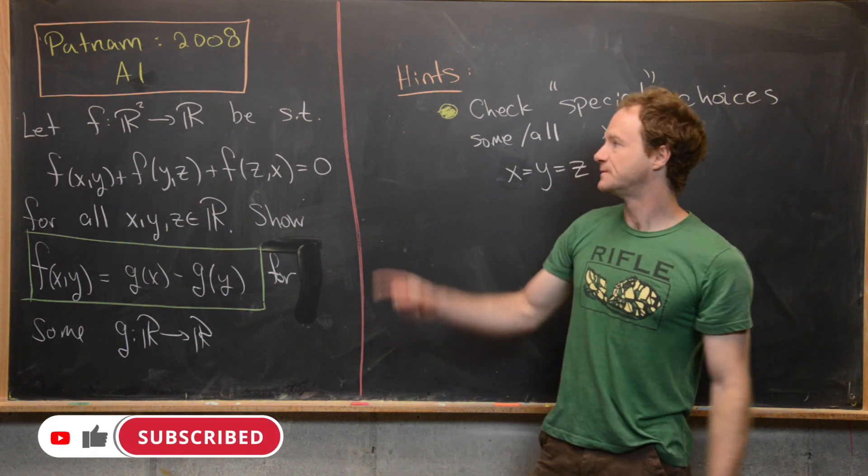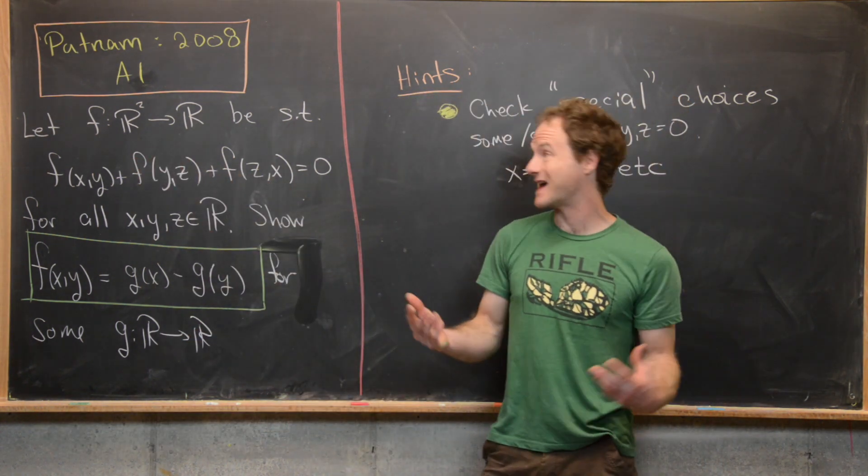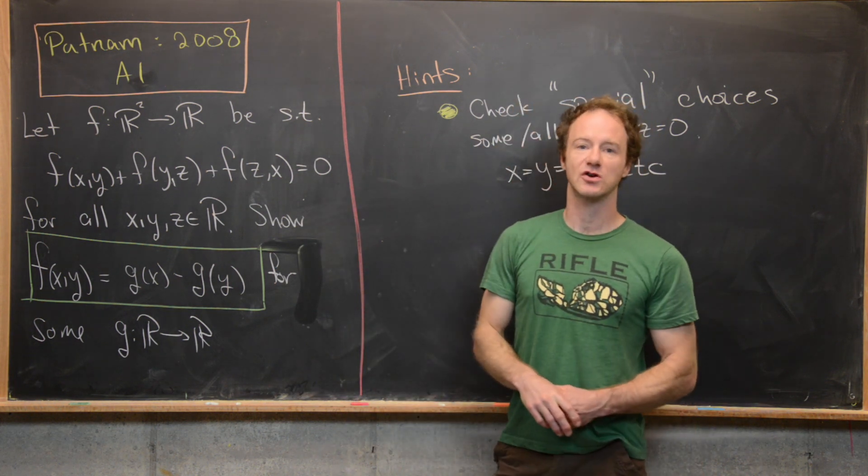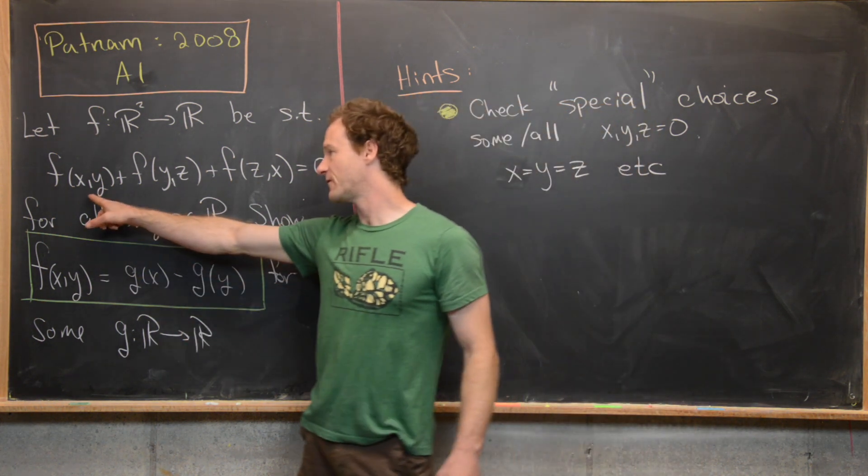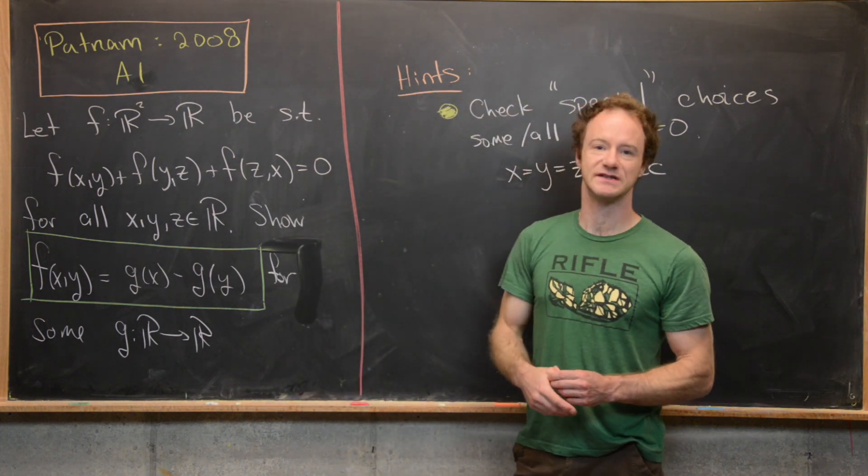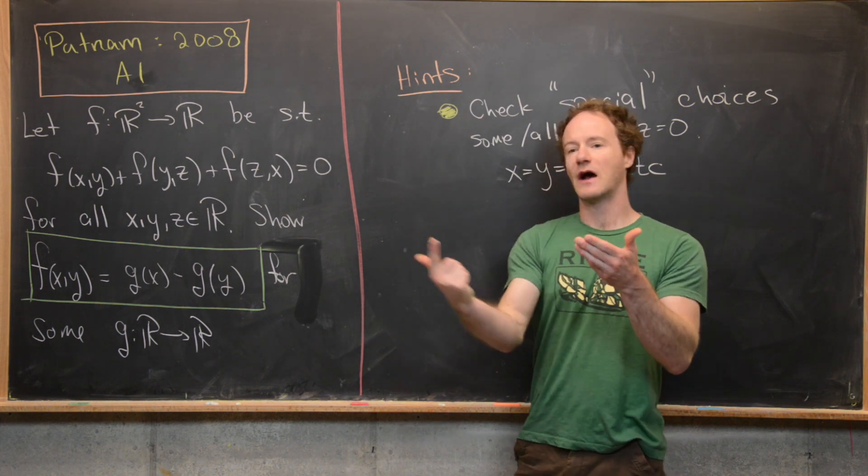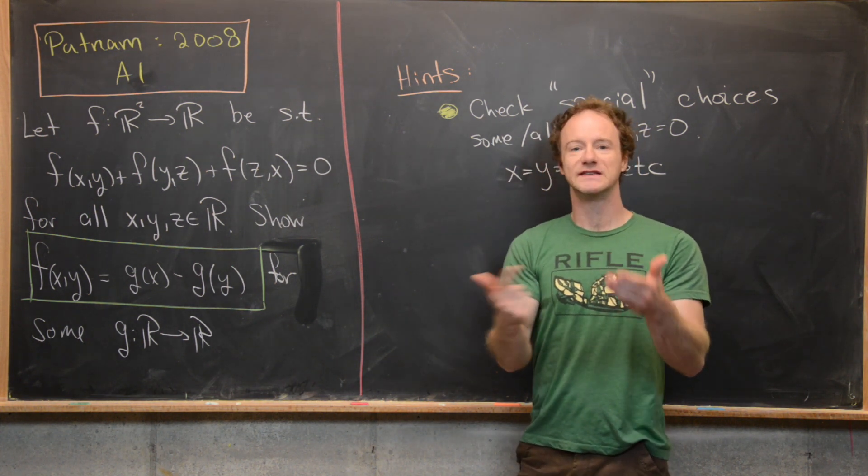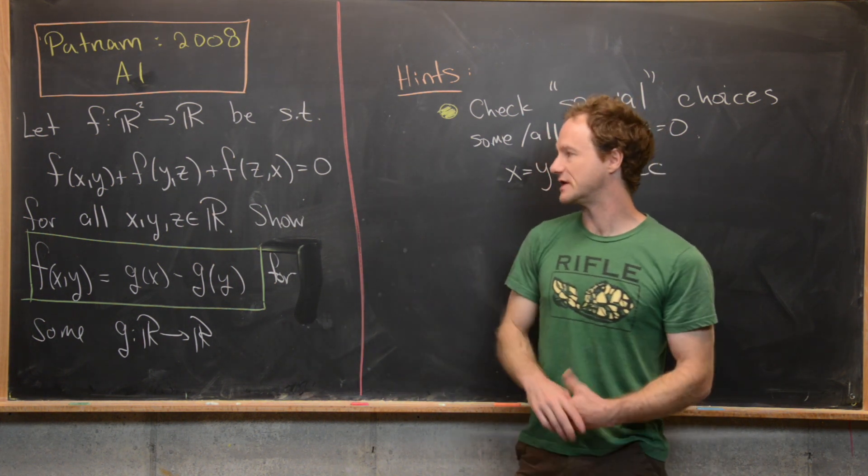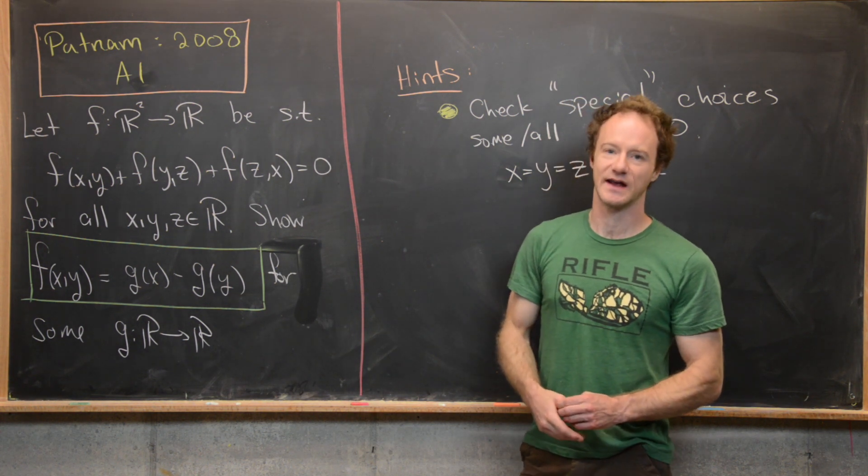Let's see what our goal is. Let f be a function from R² (so in other words from the plane) to R such that it satisfies the following functional equation: f(xy) + f(yz) + f(zx) = 0. So we've got some sort of cyclic action here that whenever you cycle x to y, y to z, and z back to x and plug them into the function and add it all up, you get 0. And this has got to be true for all real numbers x, y, and z.